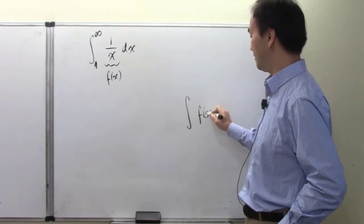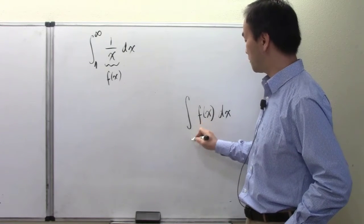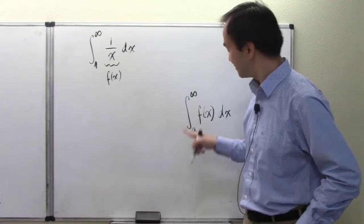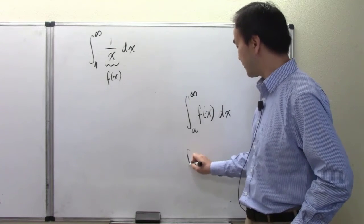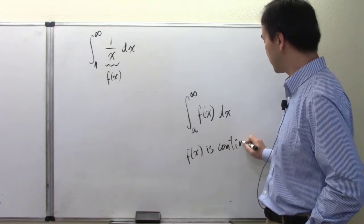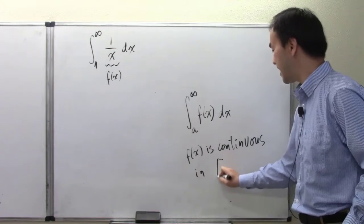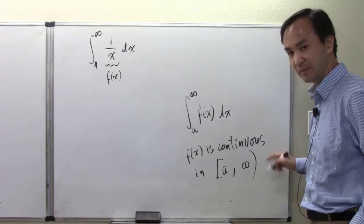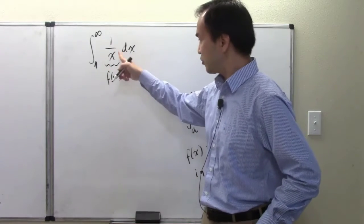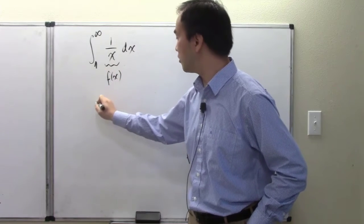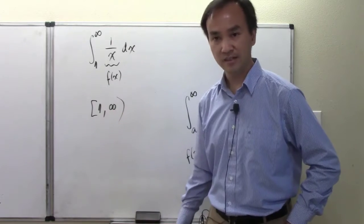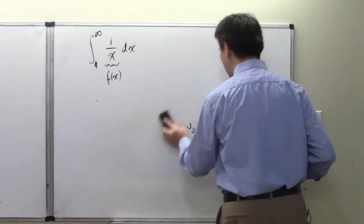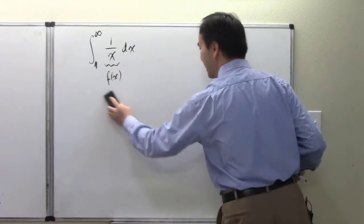Generally, I'm focusing on: whatever function f of x, taking the integral from a finite lower limit to an infinite upper end — positive infinity. The function f of x is continuous in that half-open interval from a to positive infinity.